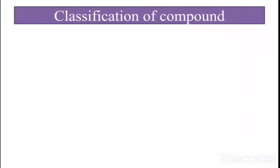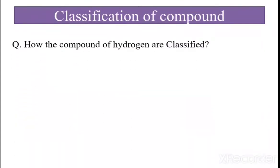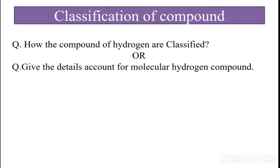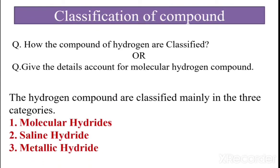First, the classification of compounds — the question is: how are the compounds of hydrogen classified? Sometimes they ask: give a detailed account of molecular hydrogen compounds. The answer is that hydrogen compounds are classified mainly into three categories: number one, molecular hydrides; number two, saline hydrides; number three, metallic hydrides. We will discuss each one by one.